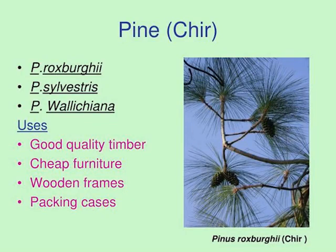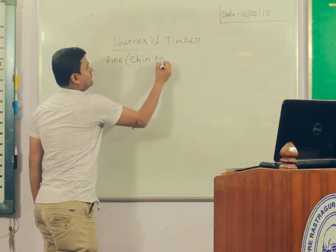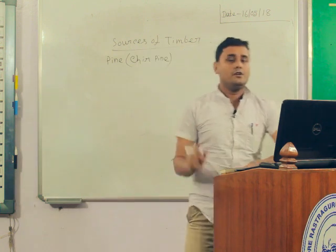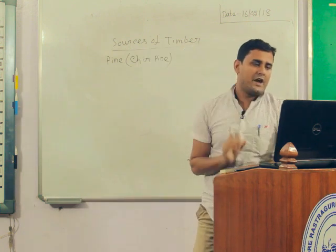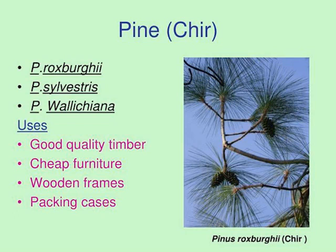First is pine, which is also known as Chirpine. The main species are Pinus roxburghii, Pinus sylvestris, and Pinus wallichiana. The uses of this timber include cheap furniture, wooden frames, and packing cases.